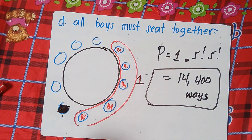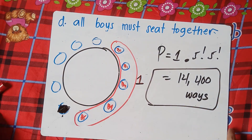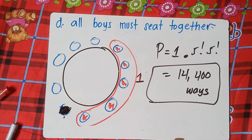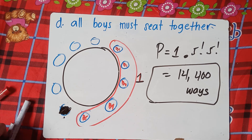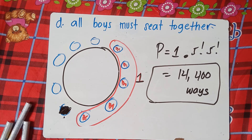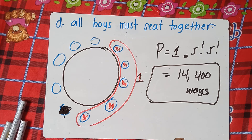That's how you solve tricky circular permutations at a round table. The key thing to remember is you always need a fixed position. I hope you liked this video — feel free to subscribe. I hope you learned something new today. Have a great day, goodbye!